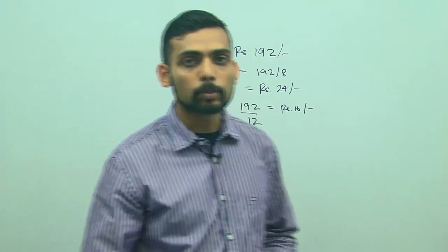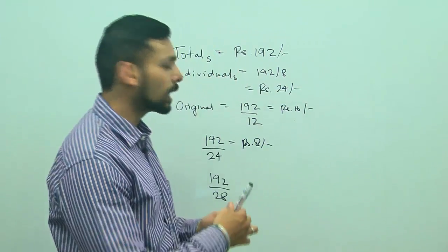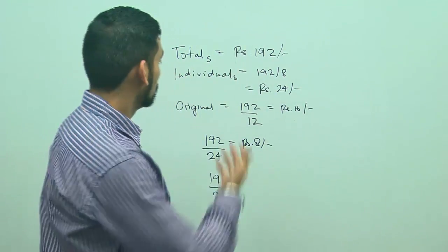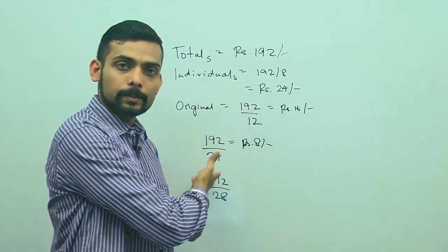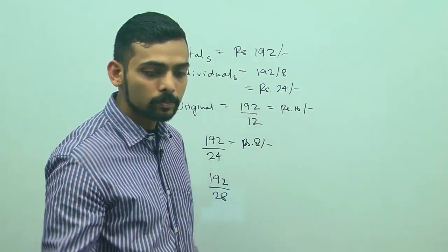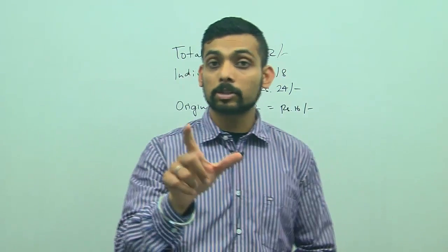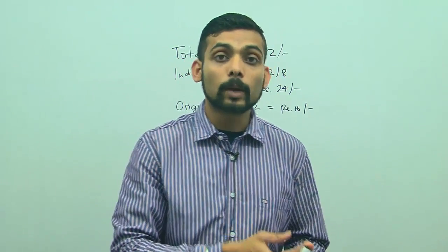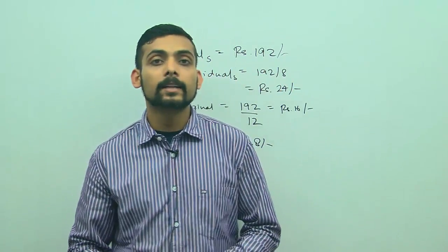So it seems lengthy, but we took time because I am explaining this to you, so I am putting down each step in detail. But when you are doing it in the exam, you are just going to divide the total spend by the people who actually went for the movie, then divide the total spend by the people who intended to go for the movie, and you will see whether the difference is 8 rupees or not.